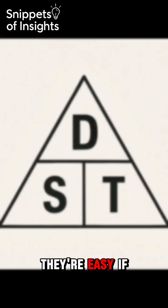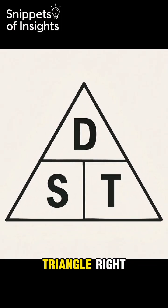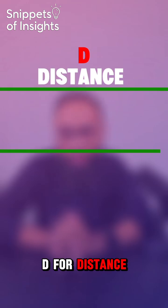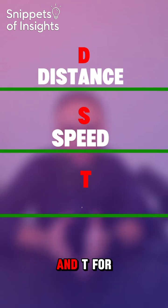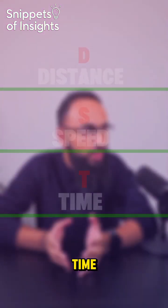Speed questions — they're easy if you get the triangle right. Let me show you. So here we have D for distance, S for speed, and T for time.